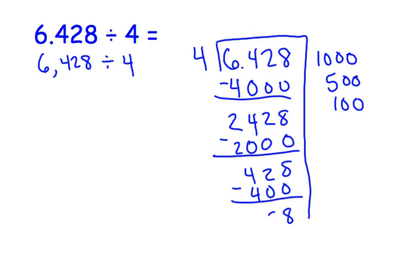We know that 7 times 4 is 28. Subtract. And we're left with 0. Let's go back and add our partial quotients.